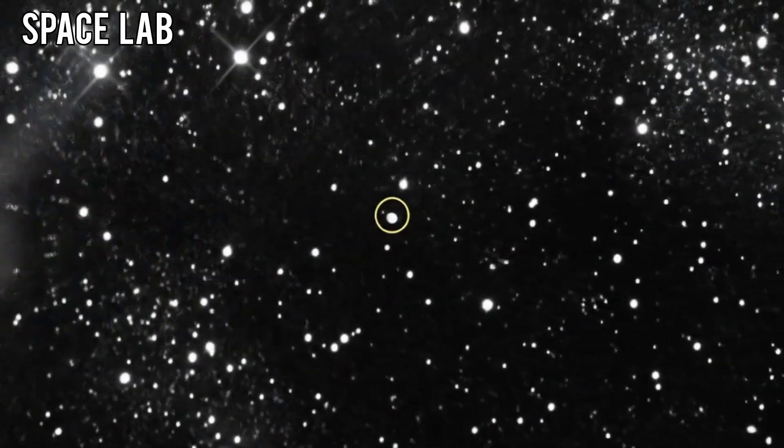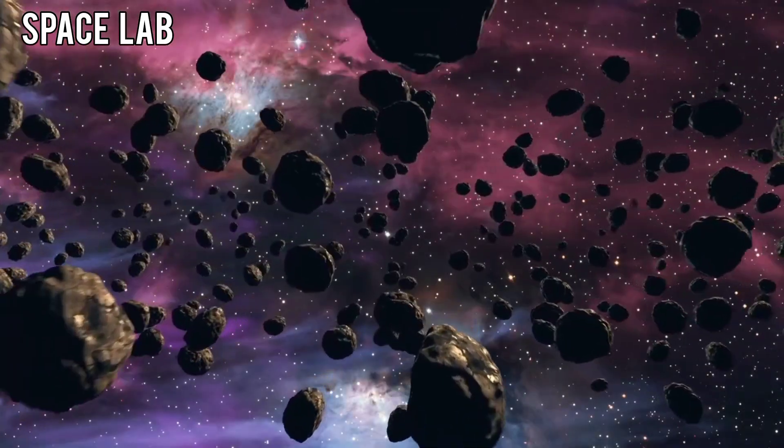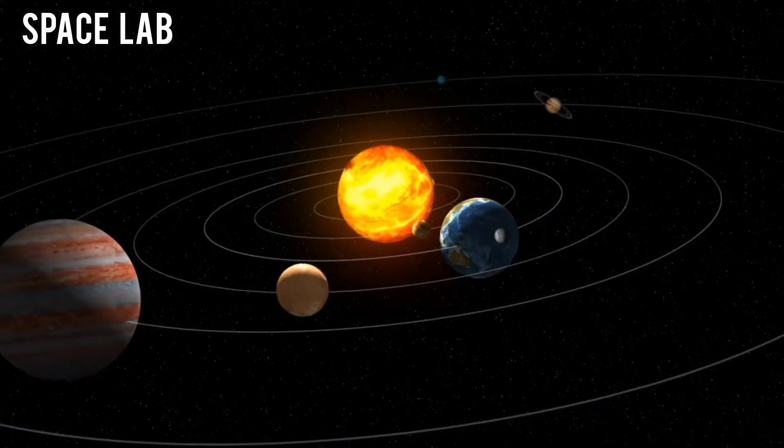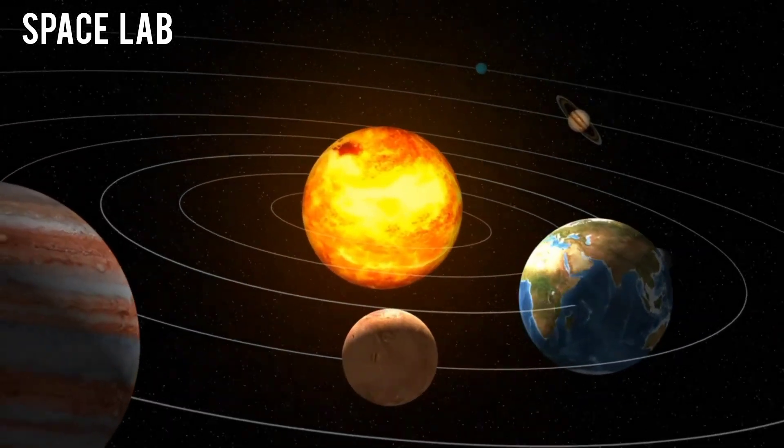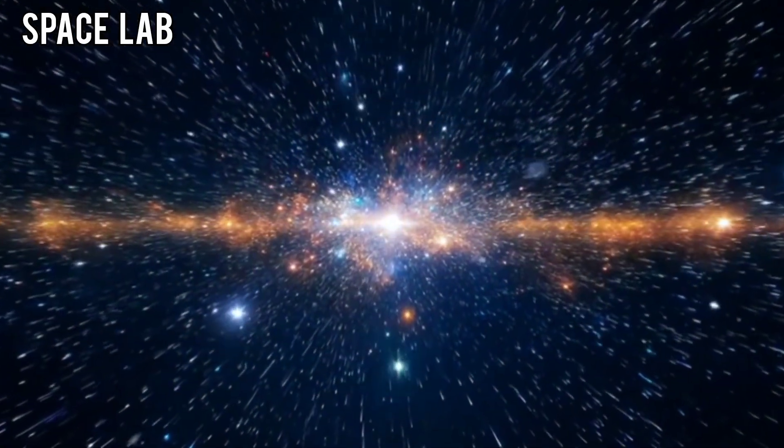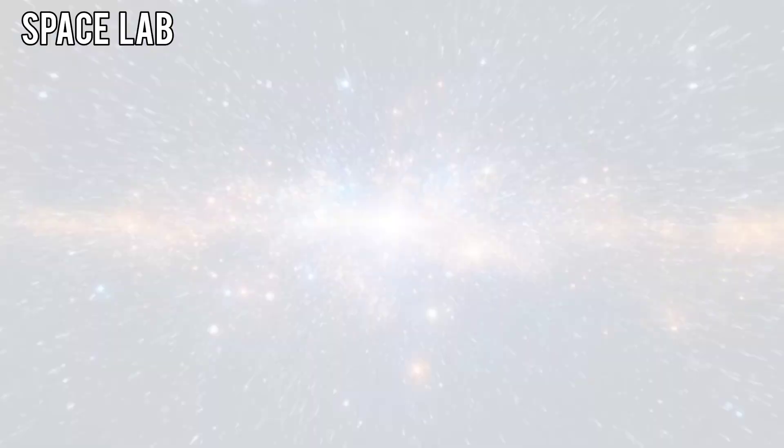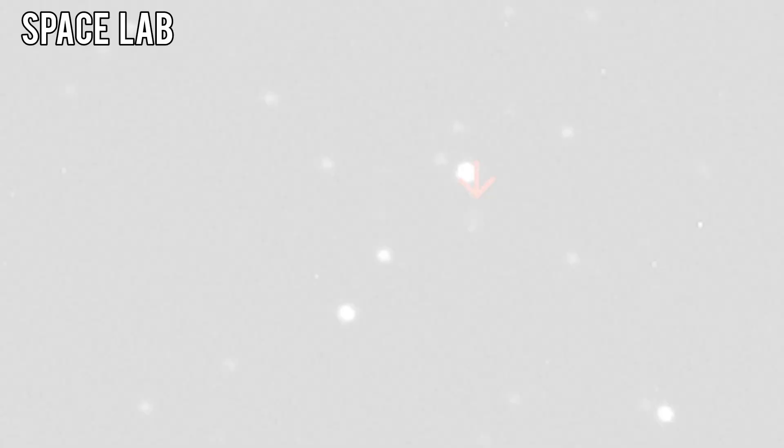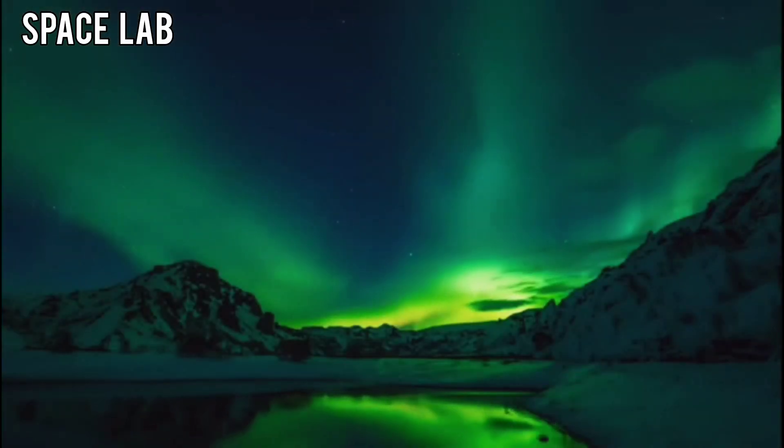31-Atlas has been an enigma since its discovery. At first, astronomers thought it was just another comet, one of millions drifting through the solar system. But its behavior was odd from the beginning. Instead of breaking apart or melting as it approached the sun, 31-Atlas seemed to hold itself together, like it had a structural integrity far beyond ordinary rock and ice. Then came the anomalies. Strange light signatures recorded by telescopes suggested the presence of artificial illumination, as though something inside was emitting power. Later, its trajectory shifted in ways scientists couldn't easily explain. Small, precise course corrections, almost like guidance.